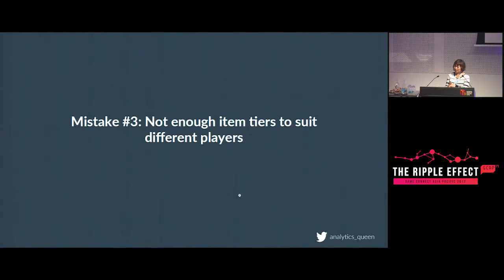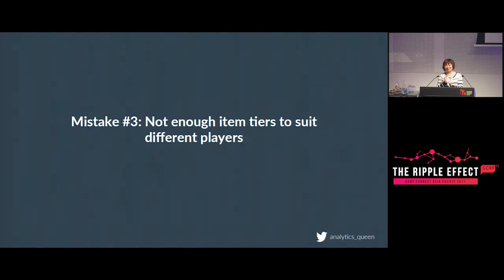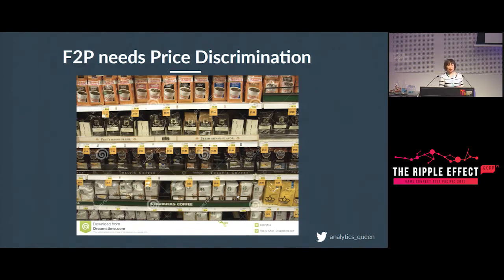Mistake number three: not enough item tiers to suit different players. Going back to the value system — 20% of players give you 80% of revenue. Item tiers need to cater for different customer groups. Free-to-play works by so-called price discrimination, that's why it works. Only 2% to 5% of people convert, but because you can charge them differently, that's why it works.